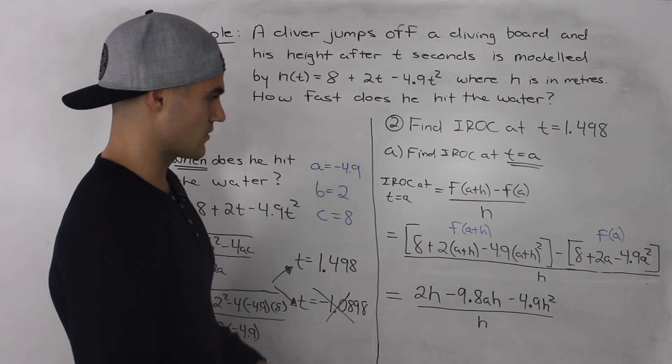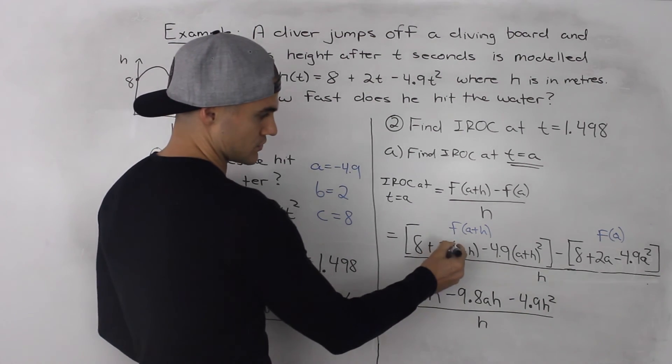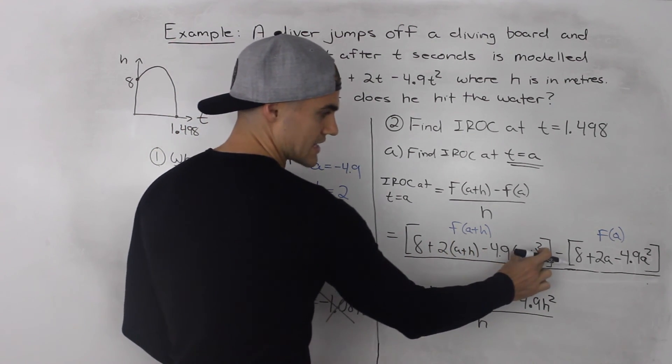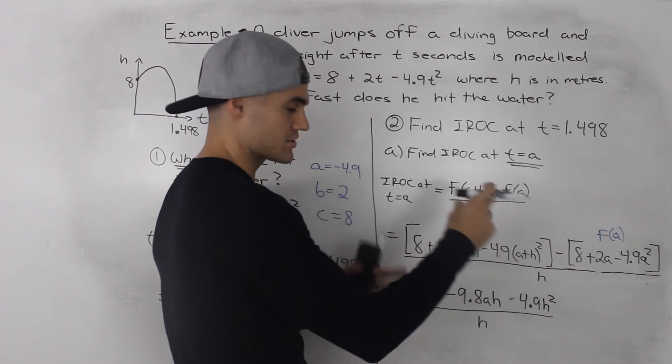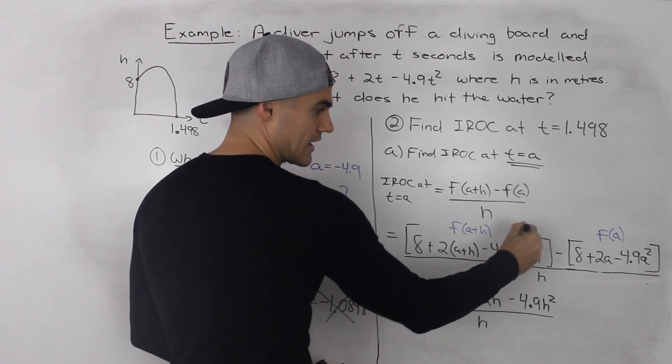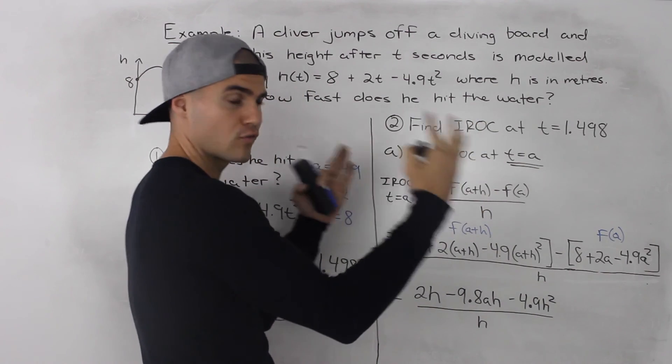So simplifying all this, you would take this and distribute it in the bracket, take this a + h, foil it because you'll have (a + h) times (a + h) and then distribute that negative 4.9 into whatever you foiled and then distribute this negative inside.